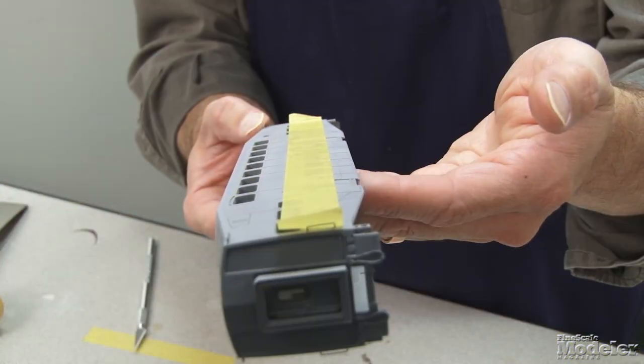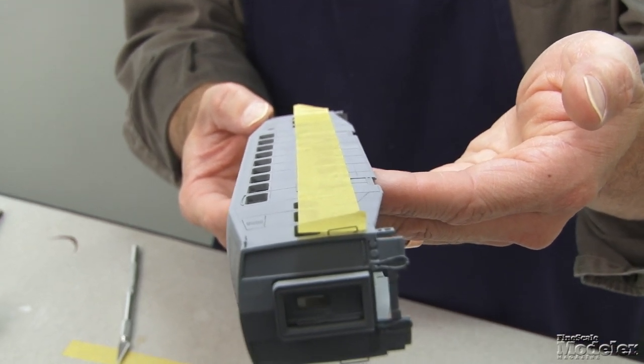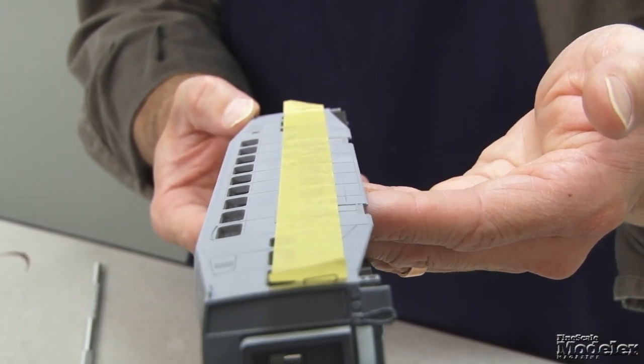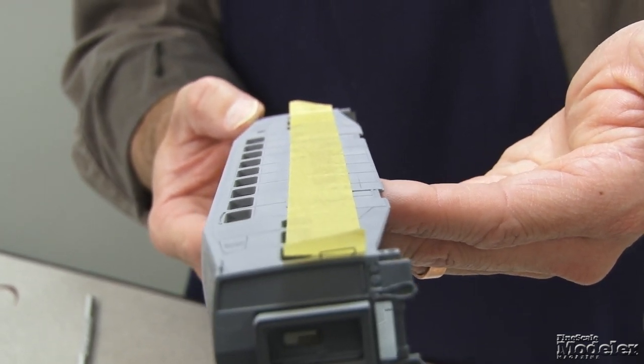One of the ways you can check the alignment on the tape is to hold it up and look straight down the car in this case. It's really obvious if the tape is kinked or bent in any way from this angle. Looks pretty good to me.